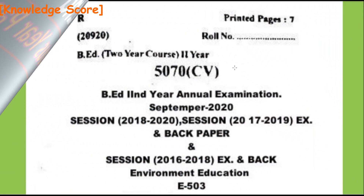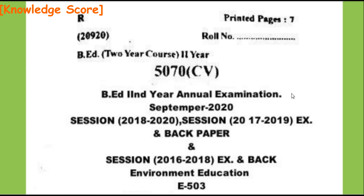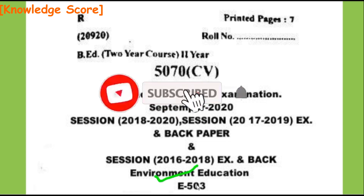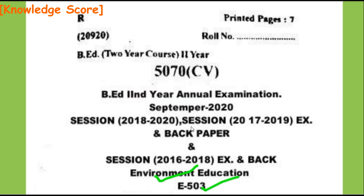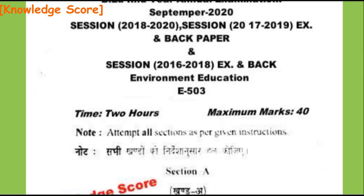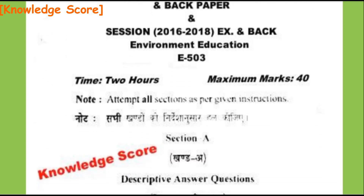This is B.Ed 2nd year Annual Examination, Environmental Education. Paper code is E-503. This paper was in September 2020, session 2018-2020. Paper timing is 2 hours, maximum marks 40. Note: attempt all sections as per given instruction.